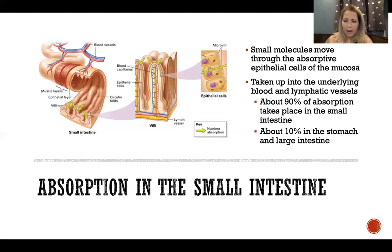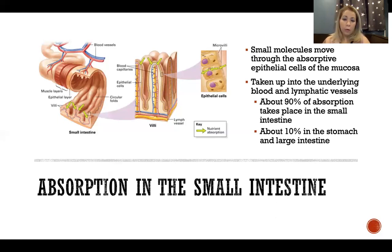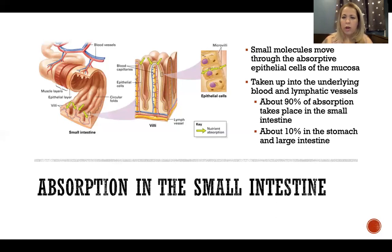About 90% of our absorption and digestion happens in the small intestine, and the remaining 10% occurs in the stomach or large intestine — much, much less. The vast majority of our absorption is in the small intestine. Thank you for watching, and I'll see you for the next video.